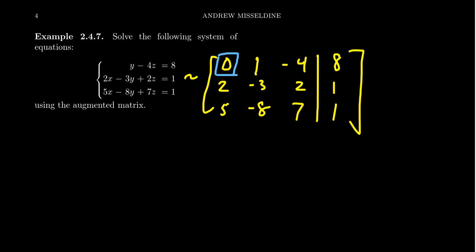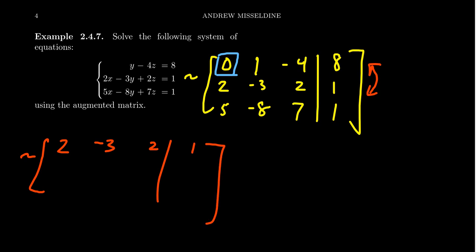One option is to interchange the second and first rows. If you do that, you'll get 2, negative 3, 2, 1 in the first row. Then this becomes your next row: 0, 1, negative 4, 8. And then 5, negative 8, 7, and 1.